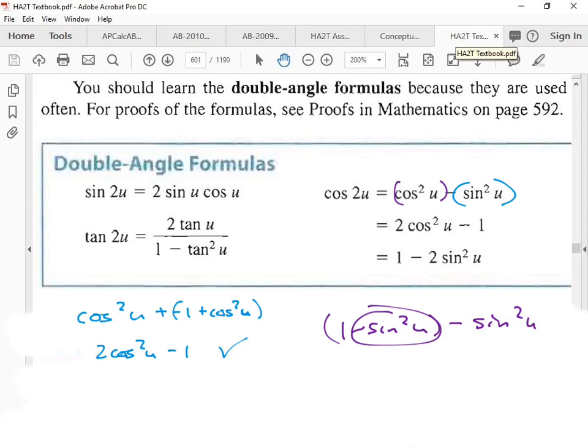We have a negative sine squared u and a negative sine squared u. If I add those together, I get one minus two sine squared u.